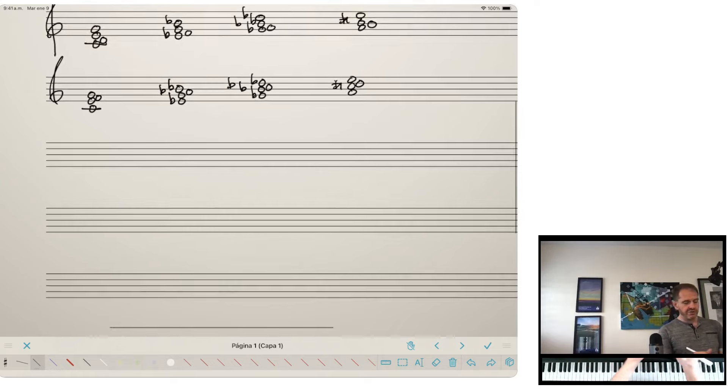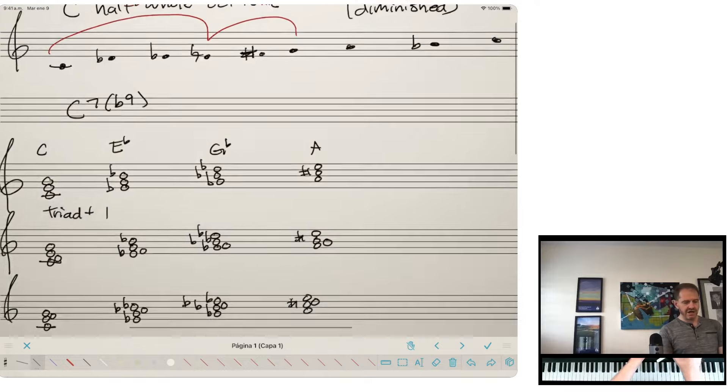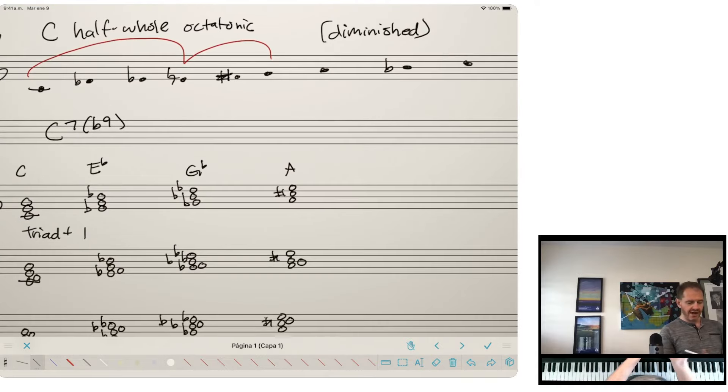And it's very much worth noting that starting from that octatonic scale again, it's not just major triads that you can get, but you can also get a minor triad. C, E flat, G. And we know if you can get C, E flat, G to make C minor, you can also create E flat minor, G flat minor, I'll just write it as F sharp, F sharp minor, and A minor.